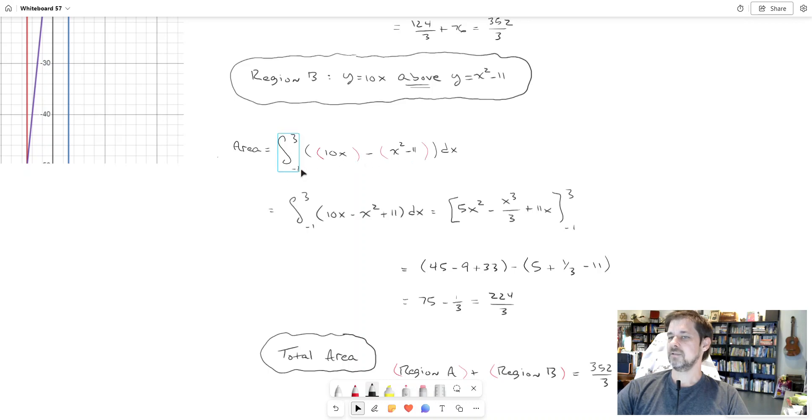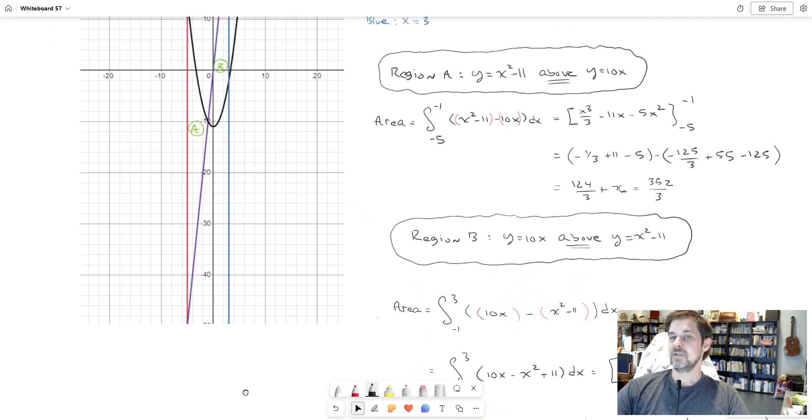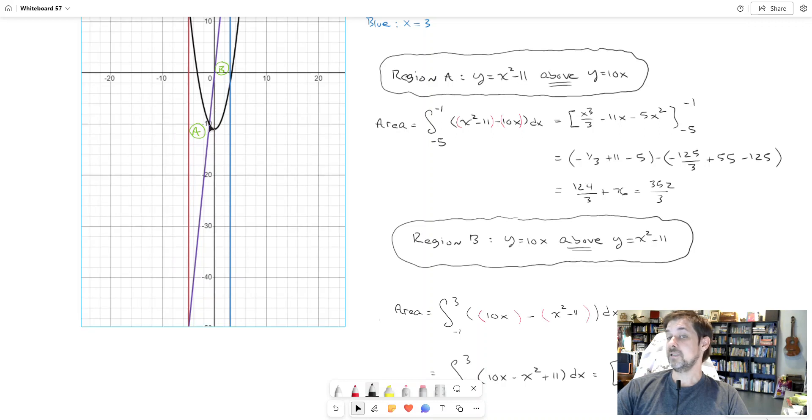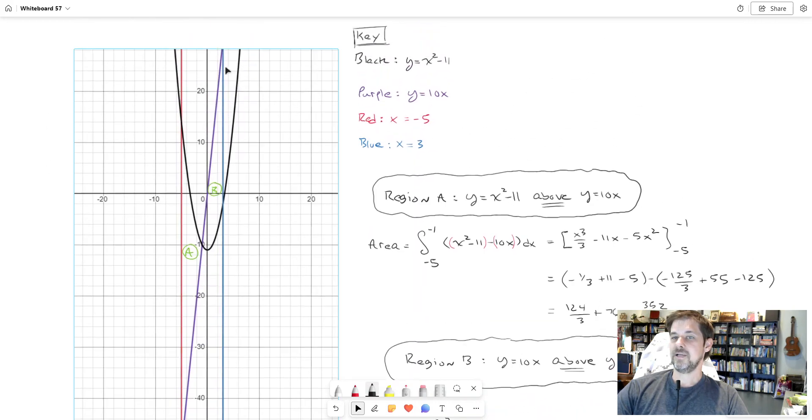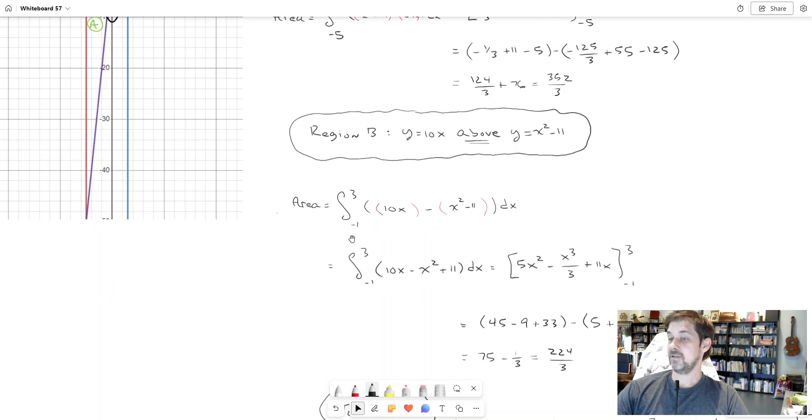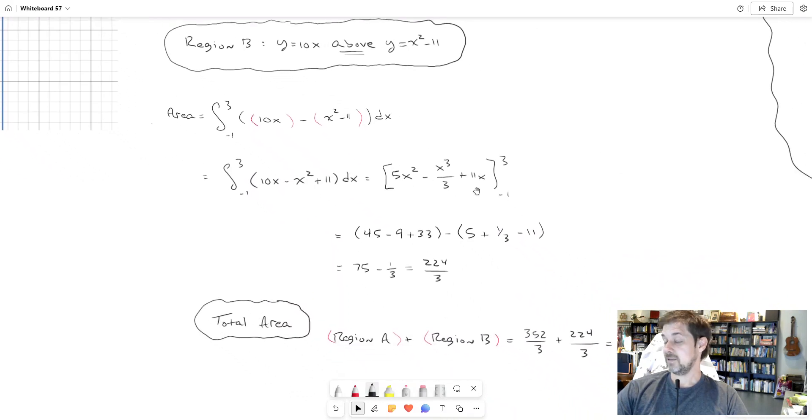I got above minus below. What were the bounds of the integrals? That was left and right. As far as region B goes, where does it begin on the left and where does it end on the right? Region B begins where region A leaves off, which is negative 1, so I put negative 1 right there. Then it ends on the right at whatever this blue vertical line is, which is 3. So my boundaries for my definite integral are negative 1 to 3. That's my setup. Remember that negative applies to this whole thing - it distributes. So I get negative x squared and I get positive 11.